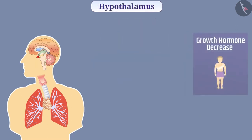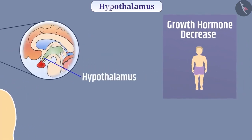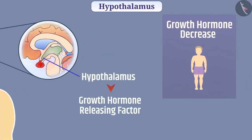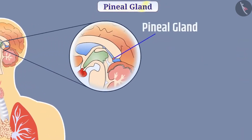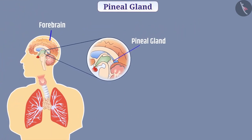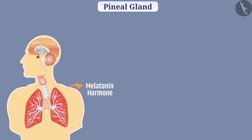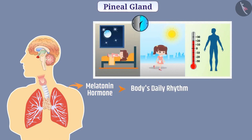When the level of growth hormone decreases in the body, the hypothalamus secretes the growth hormone releasing factor, which causes the pituitary gland to secrete growth hormone. Thus, hormones produced by the hypothalamus regulate the synthesis and secretion of hormones from the pituitary gland. The pineal gland is present in the upper part of the forebrain and secretes melatonin hormone. Melatonin regulates the body's daily 24-hour rhythm, controlling the sleep-wake cycle and body temperature.